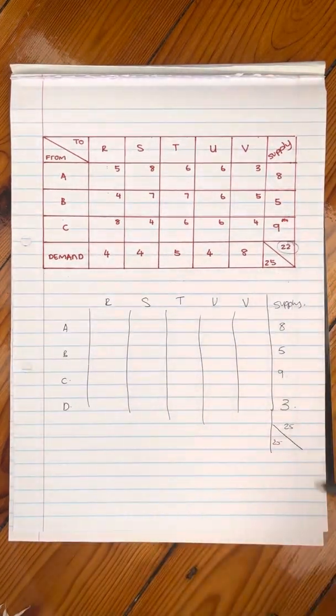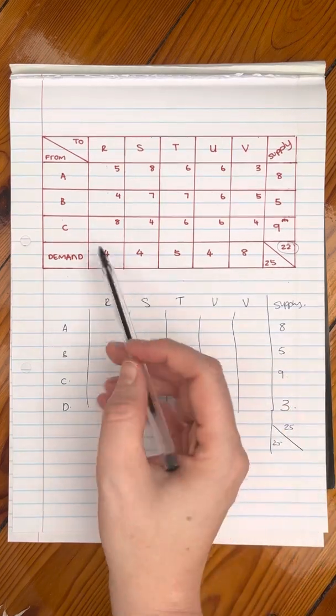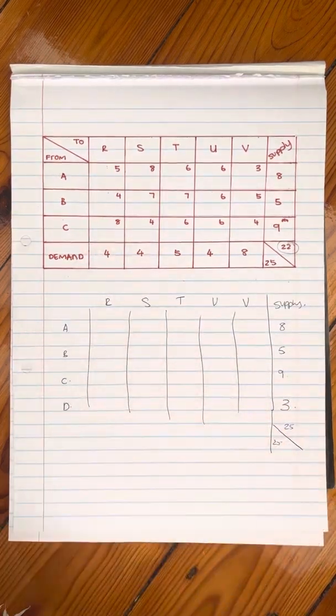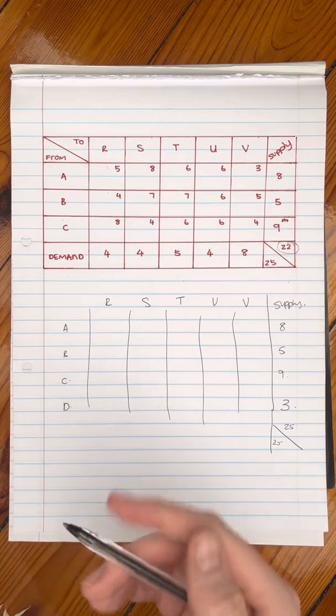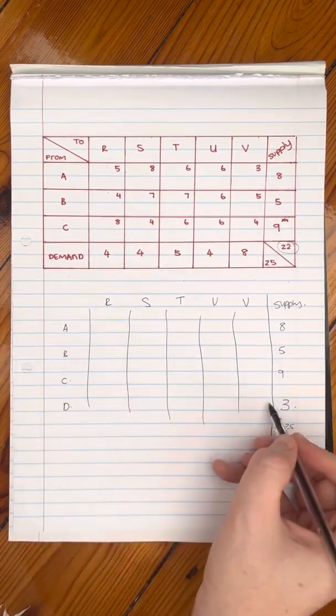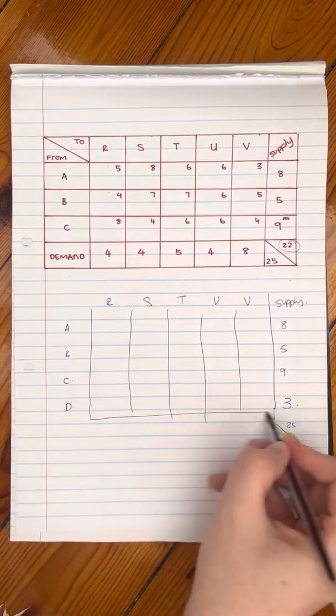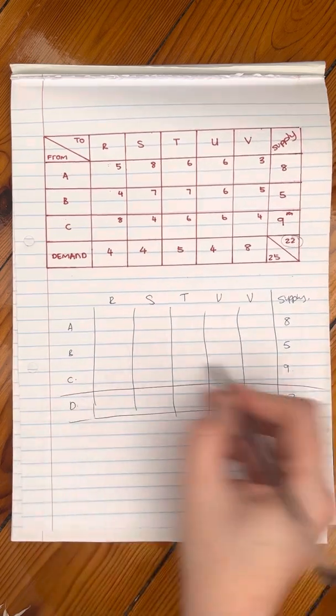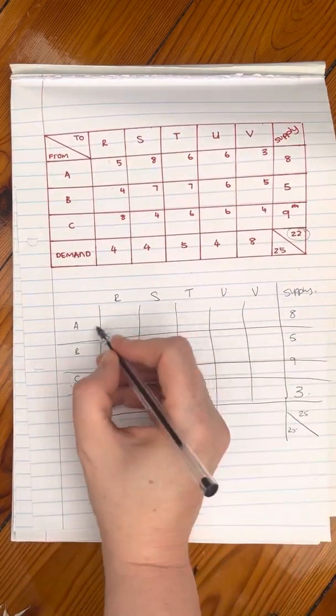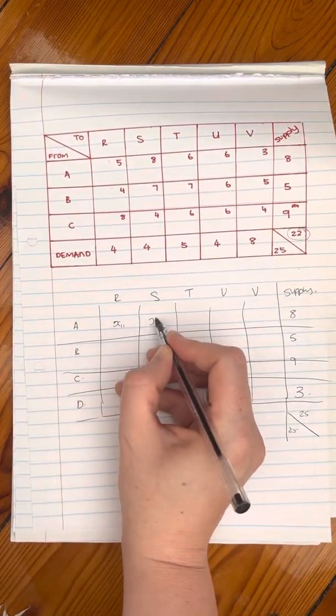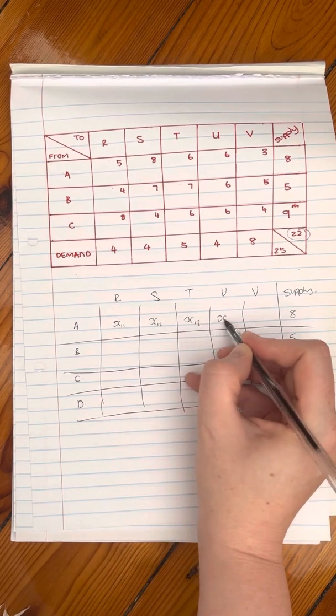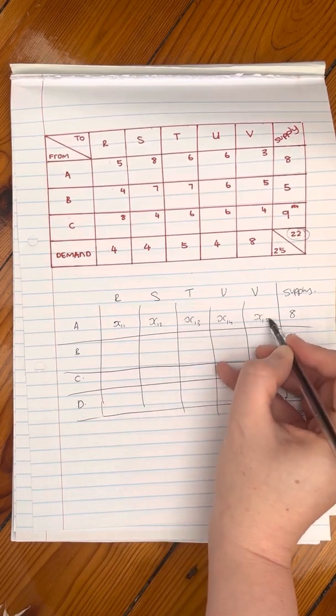And what you do is for all the cost coefficients of these new variables that we bring in, because we technically bring in new variables when we bring in this row. Remember when you have this process, this is like x11, this is x12, x13, x14, and x15, etc.